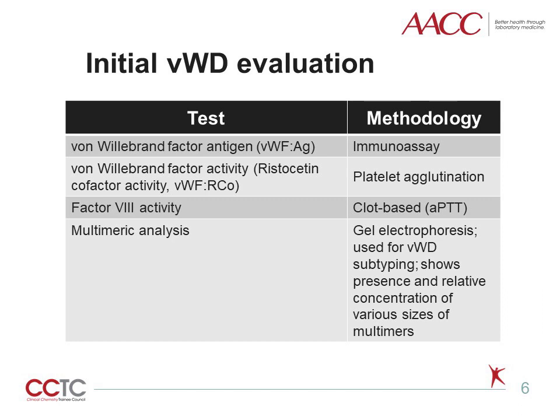The initial von Willebrand disease testing panel is often sufficient for diagnosis and subtyping, but additional testing may be needed in some cases, and there are a number of specialized follow-up tests that can be pursued when indicated. These can include tests such as low-dose ristocetin-induced platelet aggregation, low-dose RIPA, to detect gain-of-function von Willebrand factor abnormalities, collagen-binding activity, factor VIII binding activity, or genetic testing. Genetic testing can be helpful for diagnosis of difficult type II cases, since type II mutations are located in specific regions of the gene. Sequencing of the entire von Willebrand factor gene is not widely available and is done only rarely in current practice.